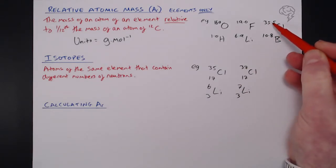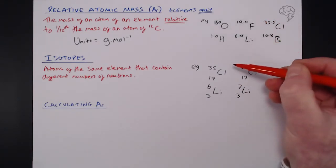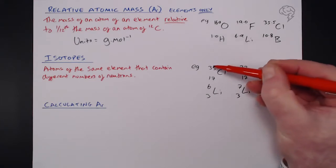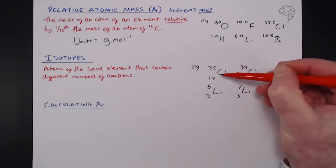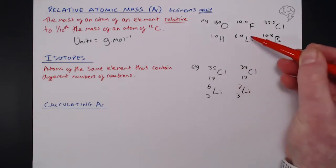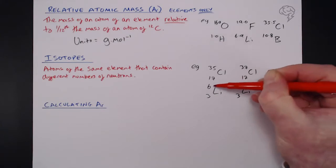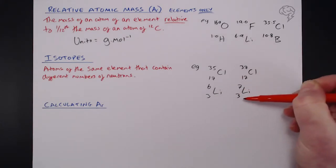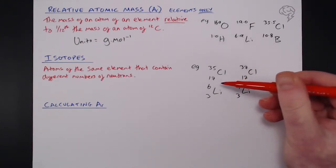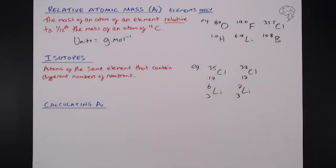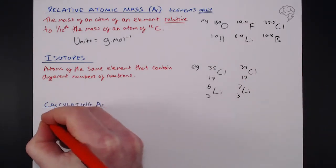So, you'll notice that with this being 35.5, then the average would swing towards chlorine-35, which means most chlorine in existence is chlorine-35. The opposite is true here for lithium. Because it's 6.9, which lies between 6 and 7, of course, most of the lithium in existence is lithium-7. So it drags that average up.